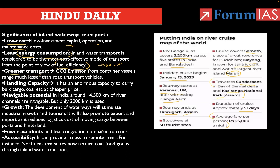Emissions are very low, making it a greener transport. After sea liners, inland waterway vessels have enormous capacity to carry bulk cargo — the order is: sea liners first, then inland waterways, then railways, then roadways — all at a much cheaper price.